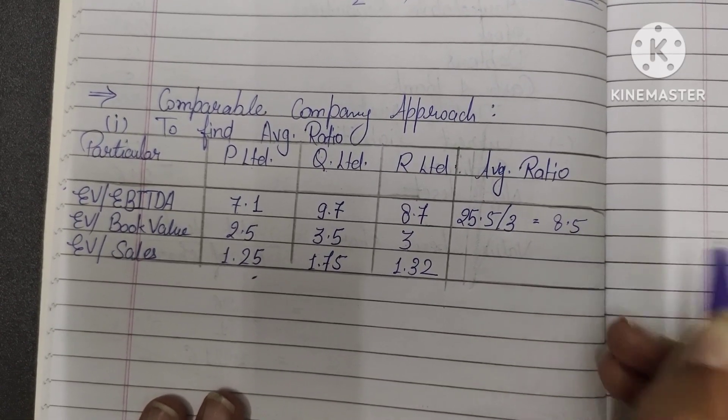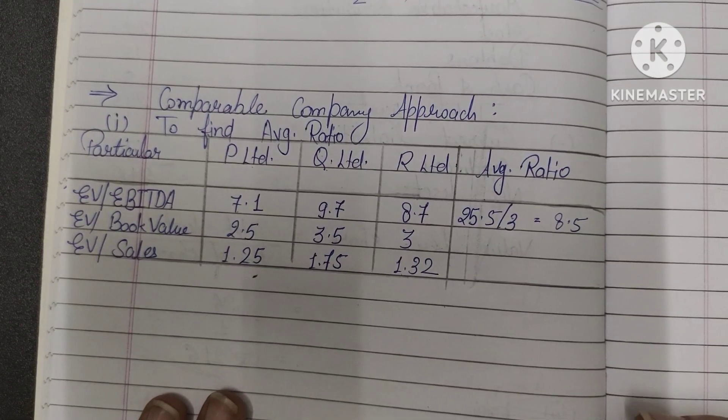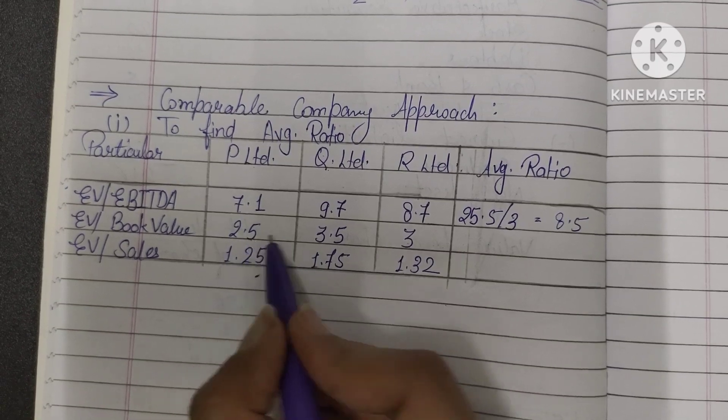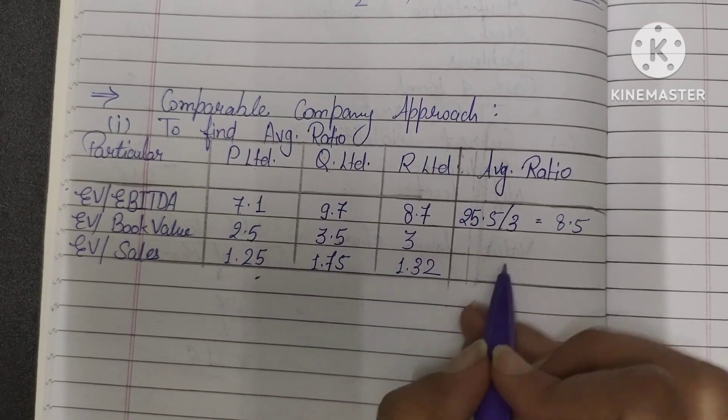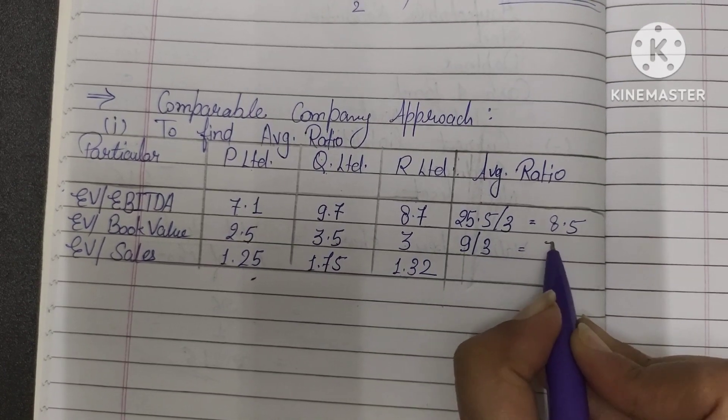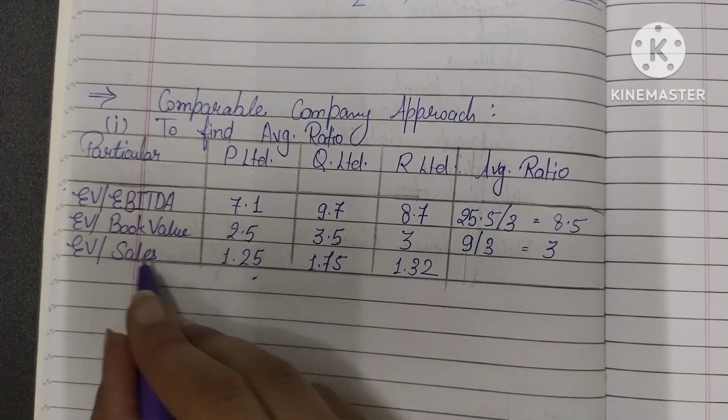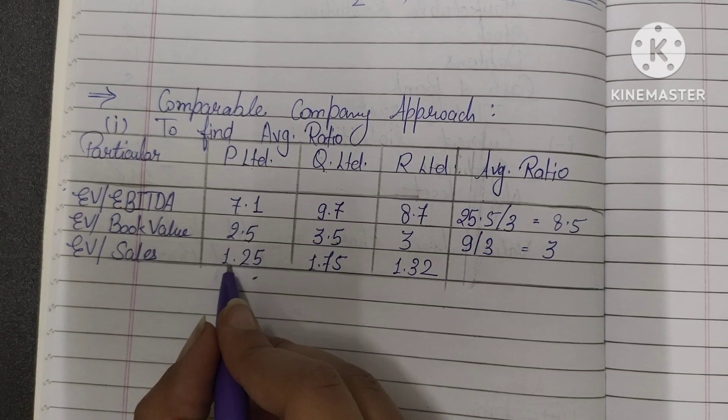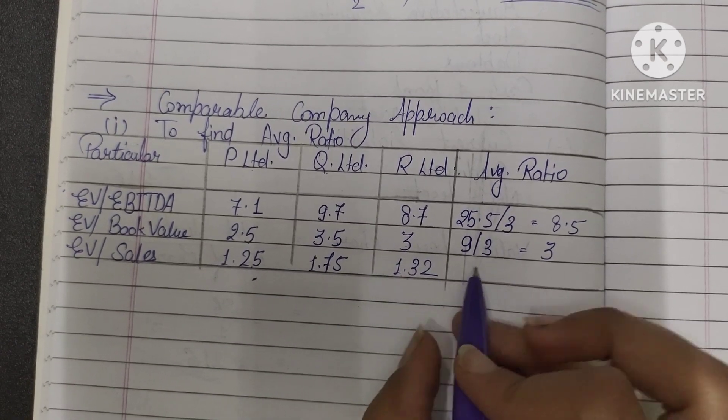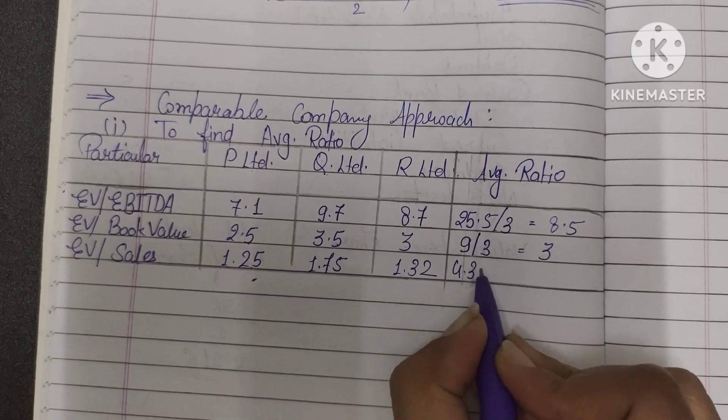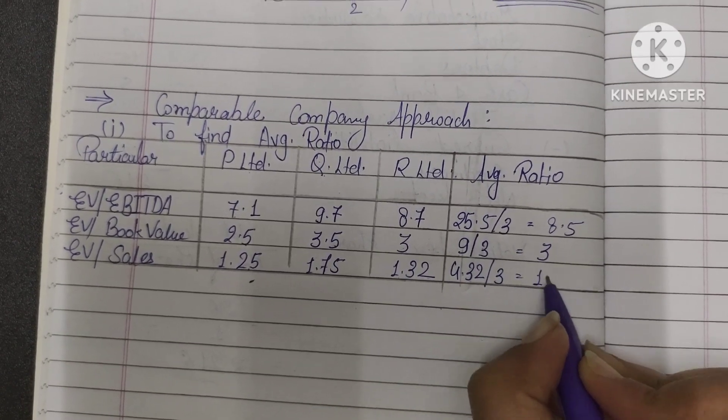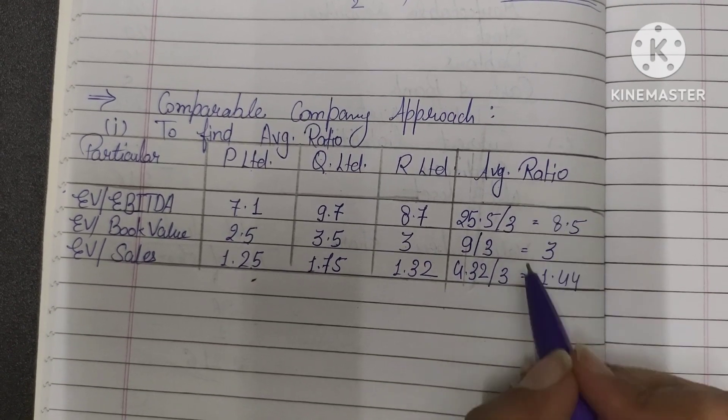Now we have to calculate average of book value: 2.5 plus 3.5 plus 3, it is 9. 9 divided by 3, it is 3. Next is for sales, same way, 1.25 plus 1.75 plus 1.32, it is 4.32 divided by 3, it is 1.44.